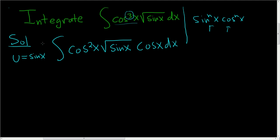The problem with setting u equal to sine x is that we still have a cosine squared here. So what we'll do is we'll use identities to clean this up. So cosine squared is equal to 1 minus sine squared x. And here we still have the square root of sine x, and then here we have the cosine x dx.